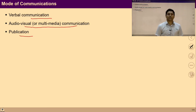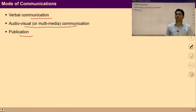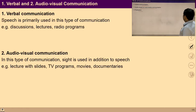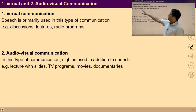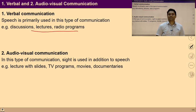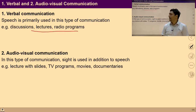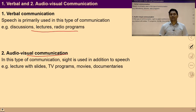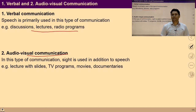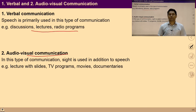In verbal communication, speech is primarily used — that is discussion, lectures, radio programs, etc. In audio-visual communication, sight is used in addition to speech — that is lectures with slides, TV programs, movies, documentaries, etc.